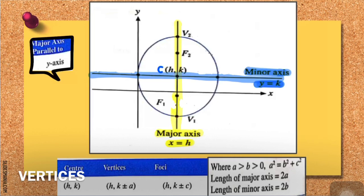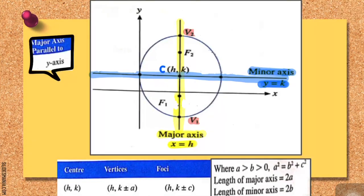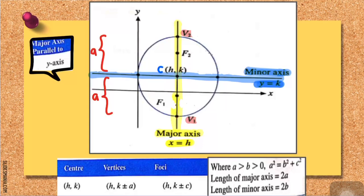The vertices are where the ellipse cuts through your major axis. You can have two vertices: V1 and V2. In order to find the coordinates of V1 and V2, it is important to note that the distance between your center and V1 is a, and the distance from your center to V2 is also a.